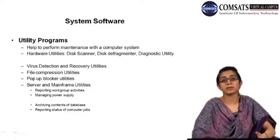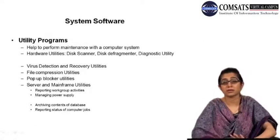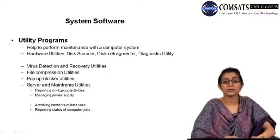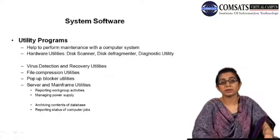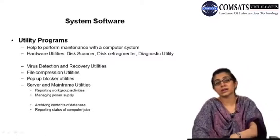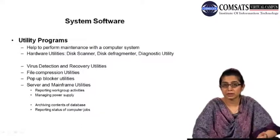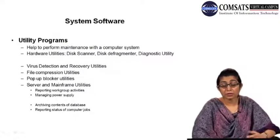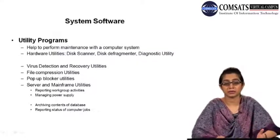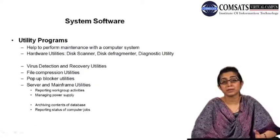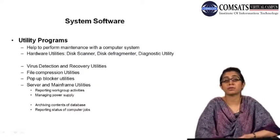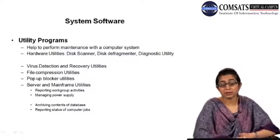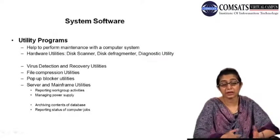When we talk about system software, we said it comes in two types: operating systems, and utility programs. Utility programs can be divided into two categories: those that are part of the operating system and those that are standalone programs that can be separately installed. These utility programs basically help in maintaining the computer system — they perform maintenance tasks within a computer system.